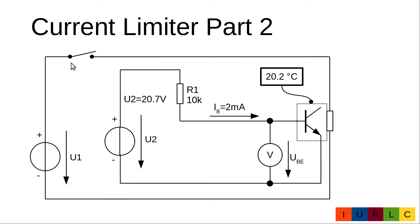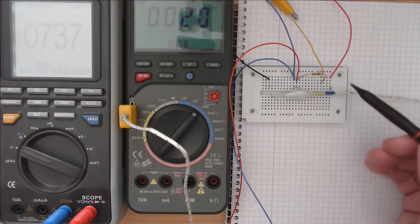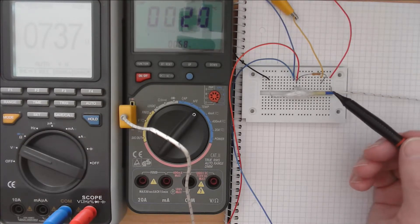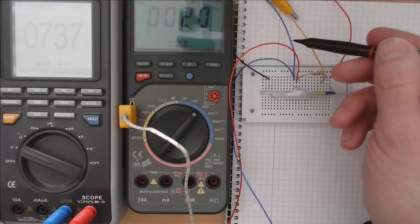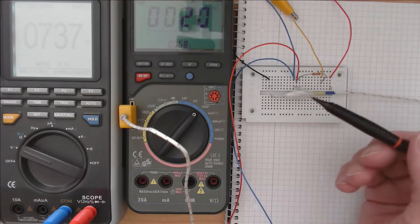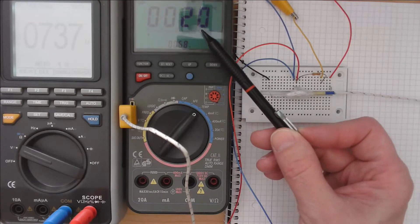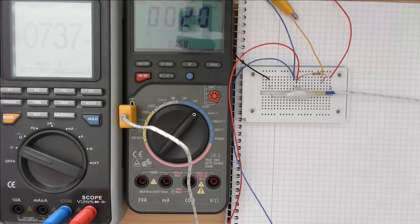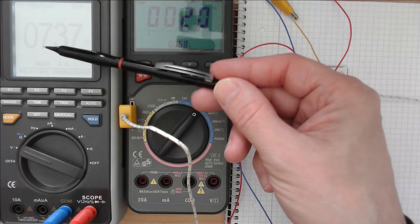In our first measurement, we do not power the heating resistor and measure the base-emitter voltage on the cold transistor. The red and black lines are the power supply for the heating resistor. The yellow and blue lines are the 20.7 V supply, going via the 10 kΩ resistor to the base and from the emitter back to the supply. The blue and red lines measure the base-emitter voltage, and the thermocouple reads temperature in degrees Celsius.